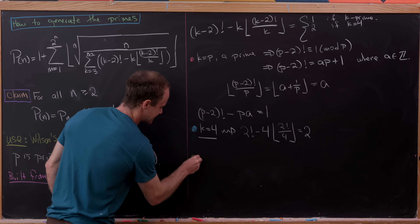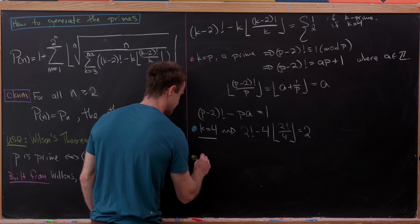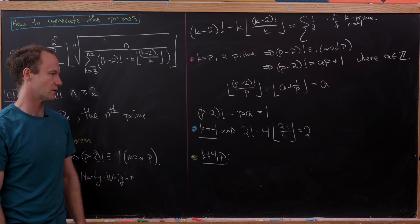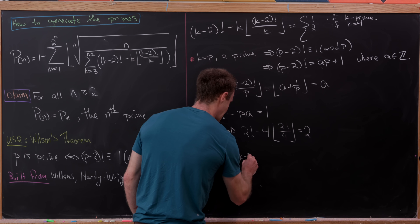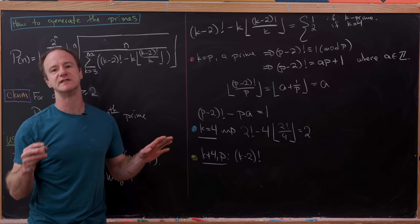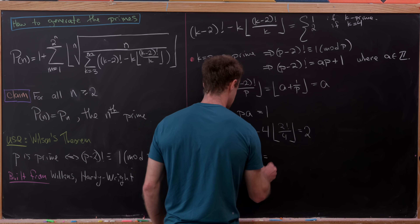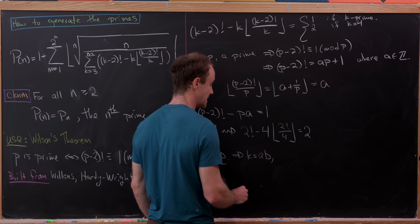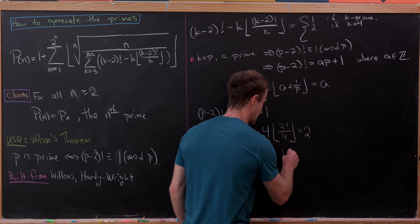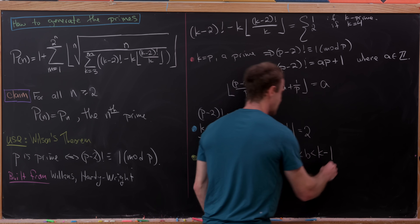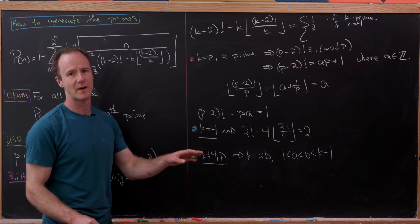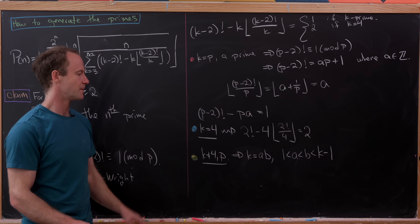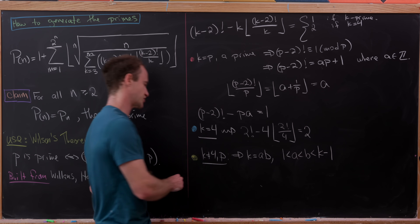Now let's look at the case when k is composite and not equal to 4. In this case, (k minus 2) factorial is congruent to 0 mod k. Here's why: if k is not 4 or a prime, then k factors as a times b where we can choose a and b satisfying 1 < a < b < k minus 1. You can go down from k because k and k minus 1 are relatively prime.